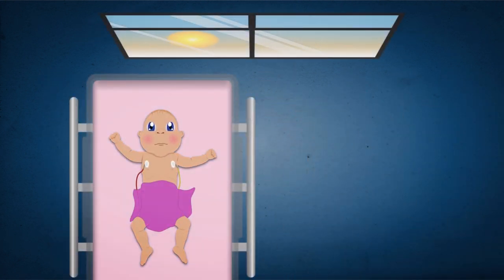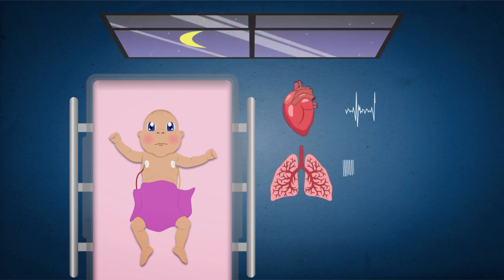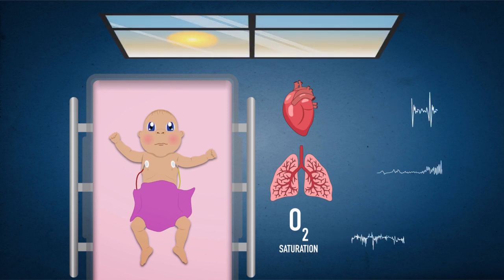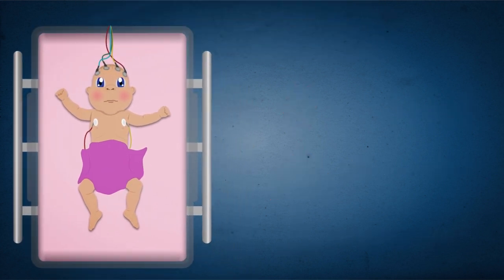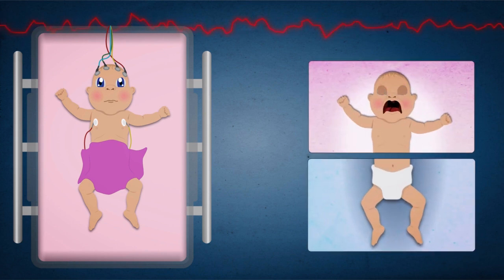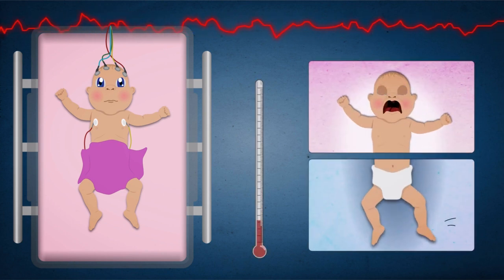Overall, babies who received morphine had slower heart rates, slower breathing rates, more drops in their oxygen saturation and more pauses in their breathing over the next 24 hours. Despite these effects, there was no sign that morphine had reduced pain for these babies.